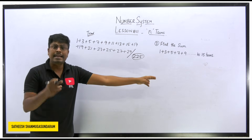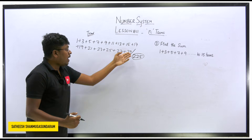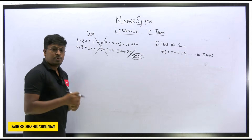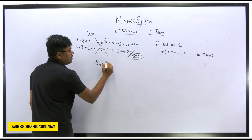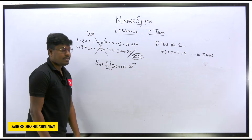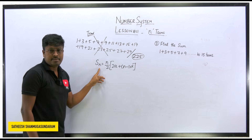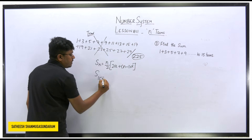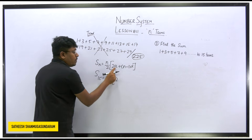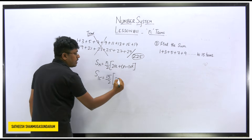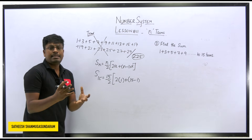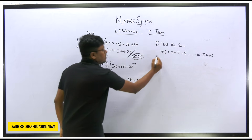Now let's solve using the formula method. The AP formula is S(n) = n/2 × (2a + (n−1)d). Here, S(n) means the sum of the series up to n terms — so S(15) since n = 15. Substituting: 15/2 × (2a + (n−1)d). The value of 'a' is the starting number, which is 1. So we have 15/2 × (2×1 + (15−1)×d).